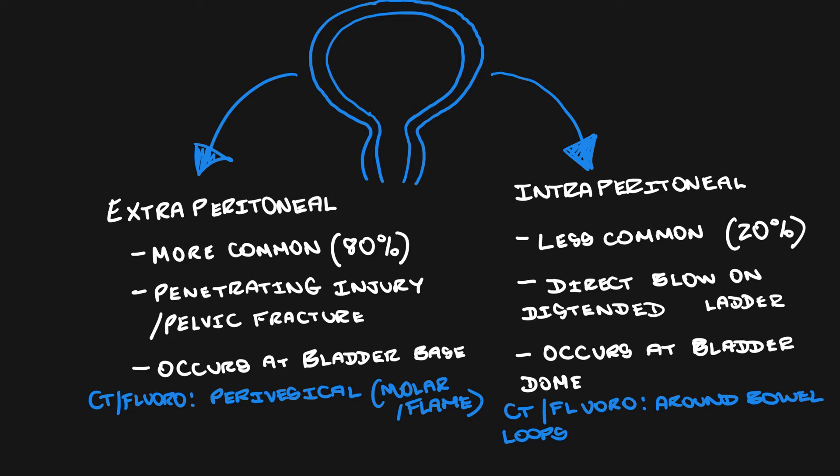There are two ways of radiologically investigating bladder rupture. You could either do a delayed phase CT and look for any contrast extravasation outside of the bladder wall, or you do cystography, where retrograde water-soluble contrast is introduced into the bladder, and you look with either CT or fluoroscopy for any contrast extravasation outside of the bladder wall.